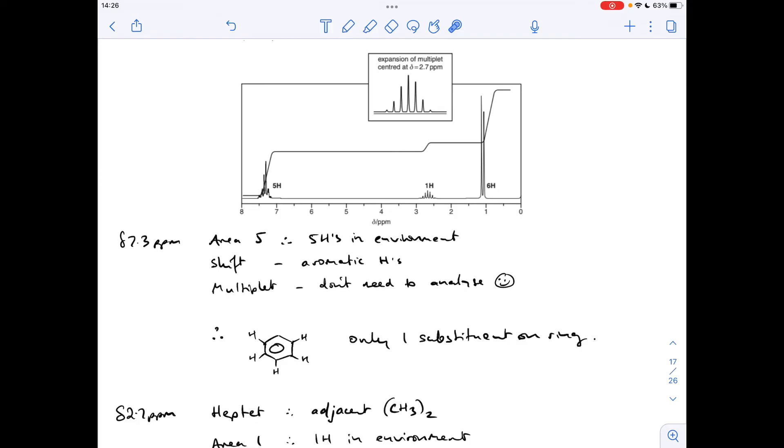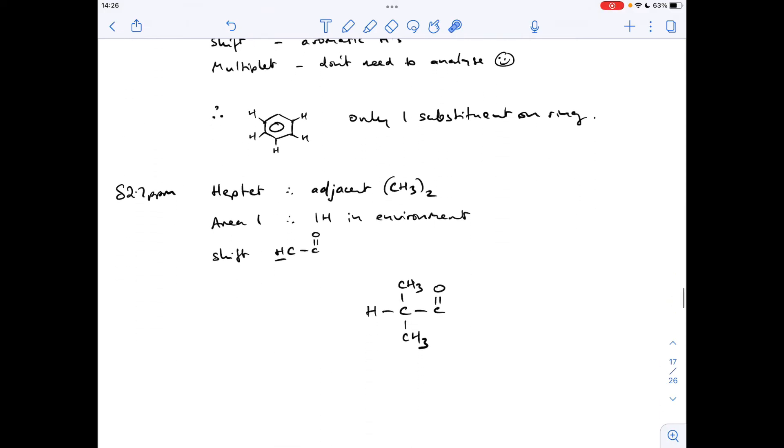So moving on to the final signal now, we've got this doublet at 1.1 ppm. The fact that it's a doublet means there must be an adjacent single hydrogen. The area of 6 means there are 6 hydrogens in the environment, so two equivalent methyl groups, and the shift value is H to C to R. So basically, it's the flip side of what we said about the heptet.